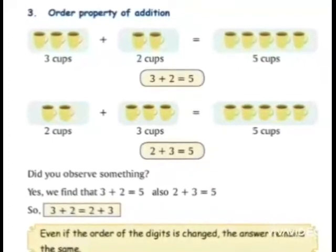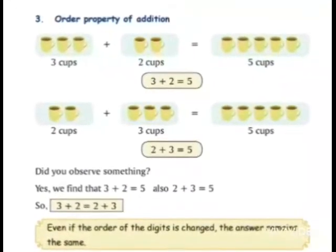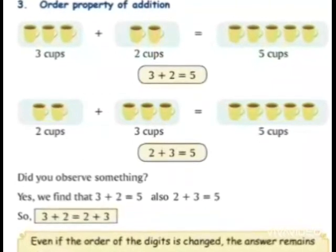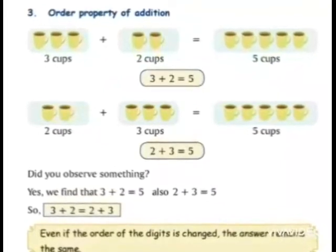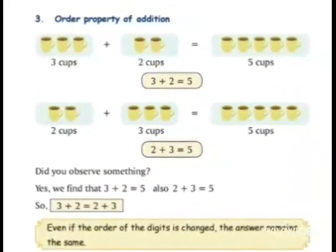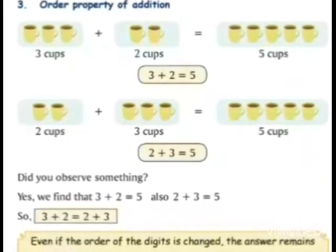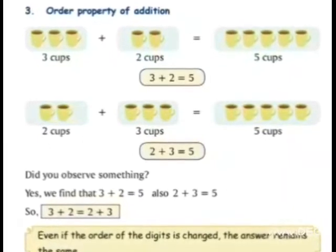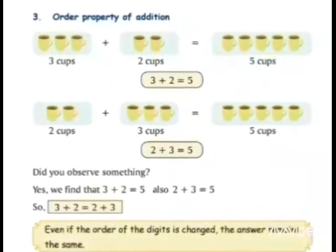It means कि अगर हम three plus two करें या two plus three करें, the answer remains the same. If we change the order of the digits, the answer remains the same. अगर हम digit को change करते हैं, उसके place को change करते हैं, लेकिन answer में हमारा कोई change नहीं आएगा। अगर same digit है तो answer भी same आएगा। अगर हमारा order change हो रहा है, लेकिन हमारा answer same आएगा अगर हमारे digits same हैं।